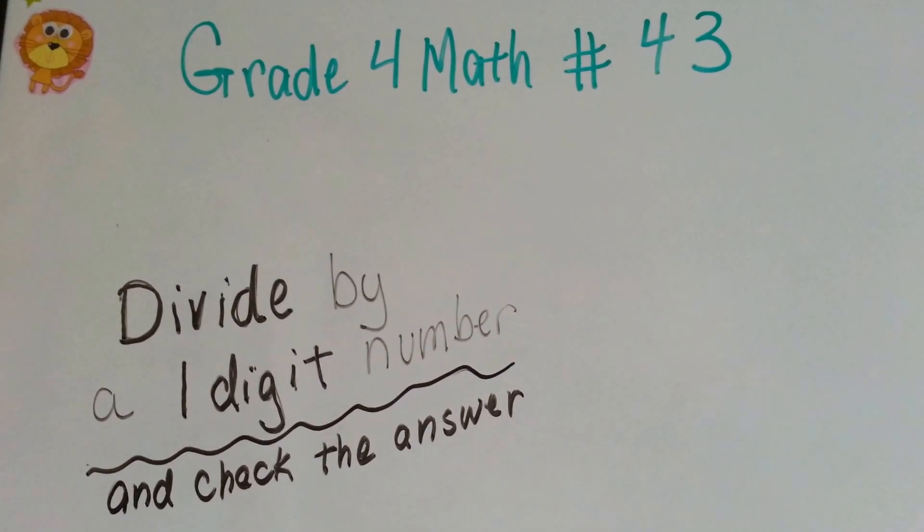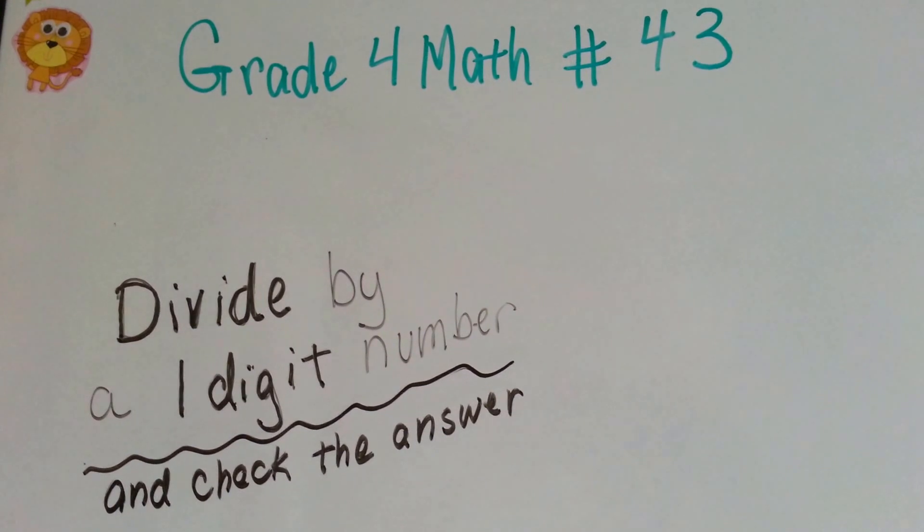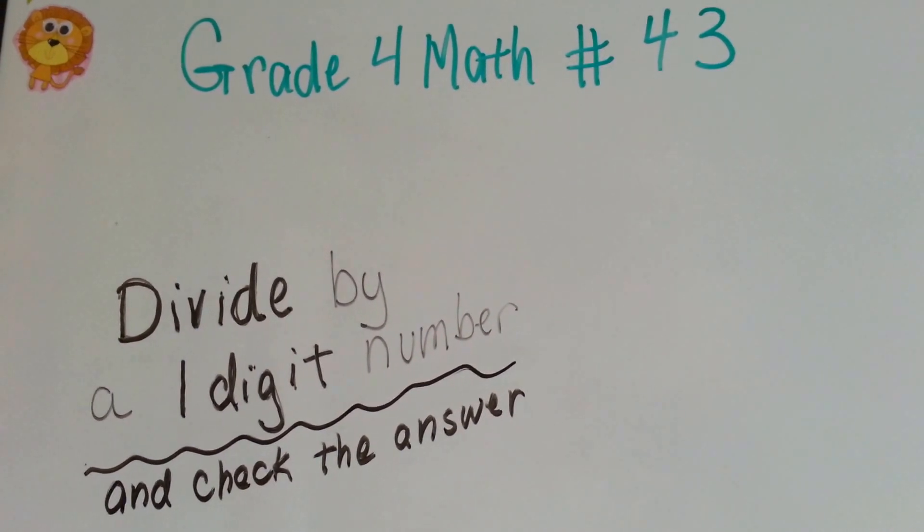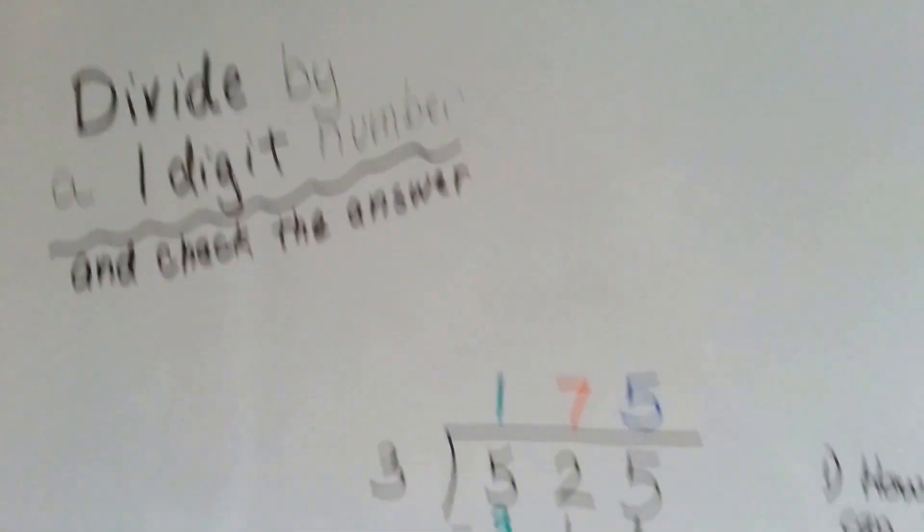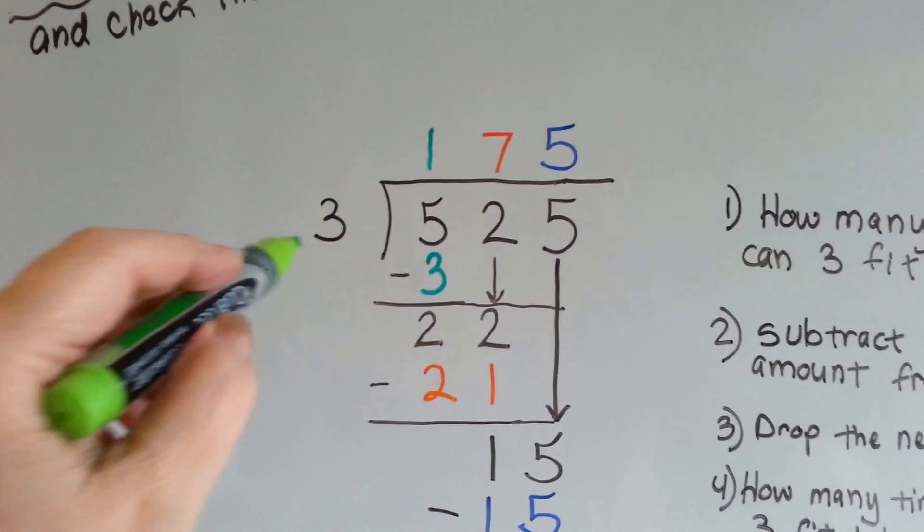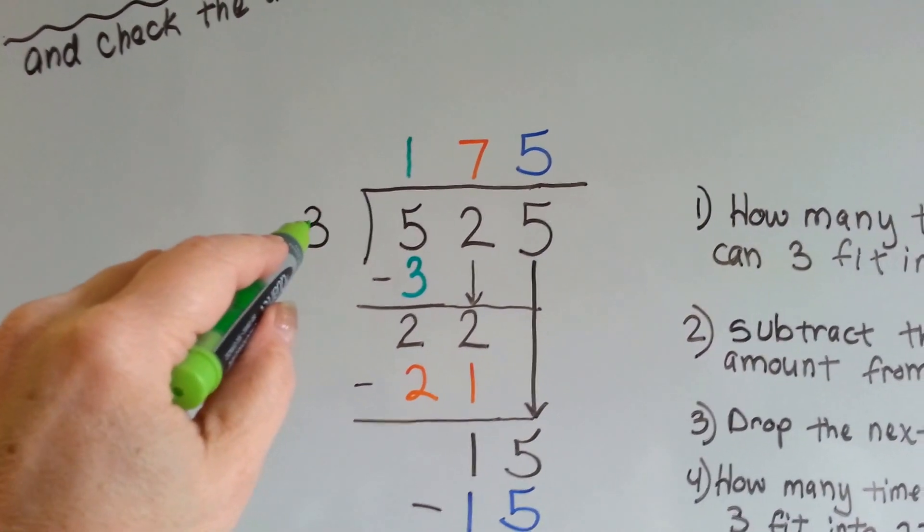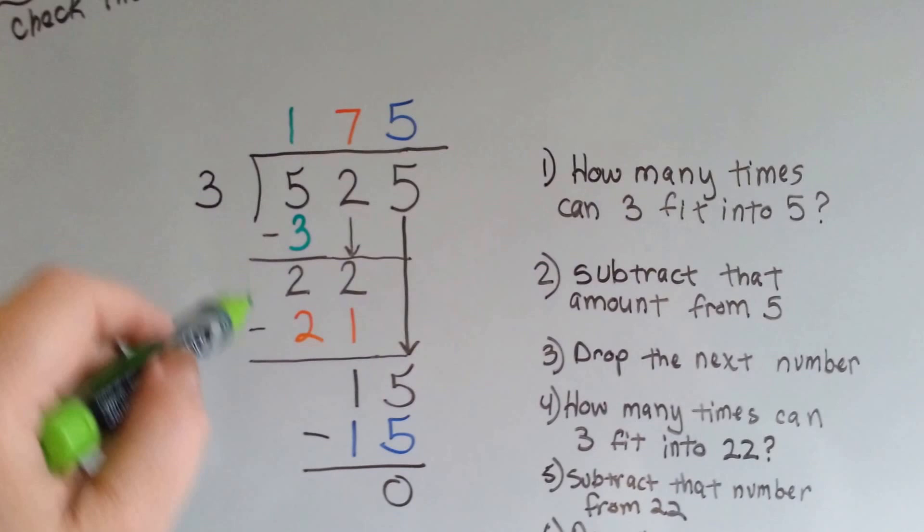Grade 4 math number 43. Divide by a one-digit number and check the answer. When we're dividing by a one-digit number, that means this is the one-digit number. This is how we do it.